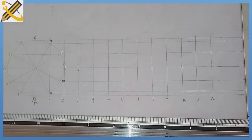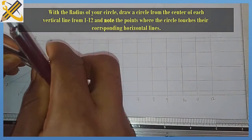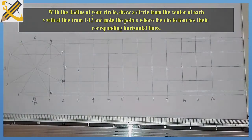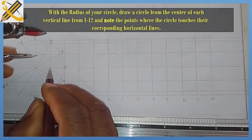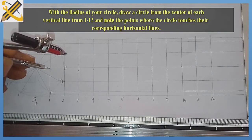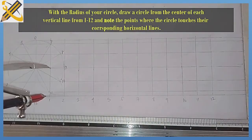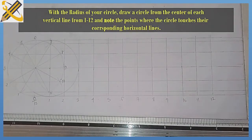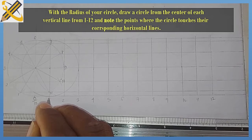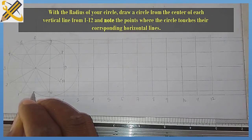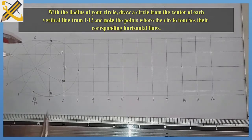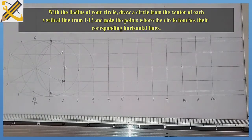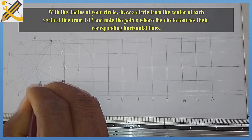Having done that, the next procedure is to go back to your circle and pick its radius, which is radius 30. After picking the radius, you place it at the midpoint over the vertical line of 1 — this is the midpoint of the vertical line of 1. Draw a circle there. Wherever this circle touches the horizontal line of 1, you astericate that point. Then go to the vertical midpoint of 1.2 and with the same radius produce another circle. Wherever it touches the horizontal line of 1.2, astericate that point.